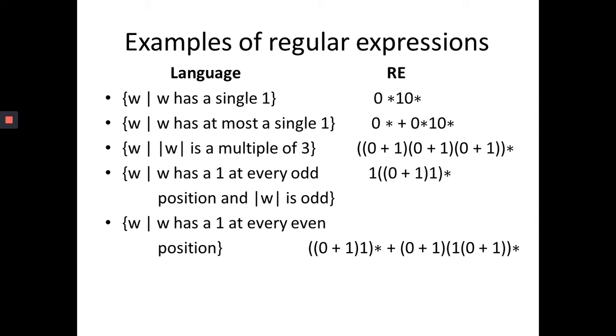Some examples, like when we try and map a language and try to write the regular expression. If language is W such that W has a single 1, the regular expression will have only one 1 in that. You can write the regular expression as 0 closure, 1, 0 closure, that is, start and end with 0 closure and in between write 1.